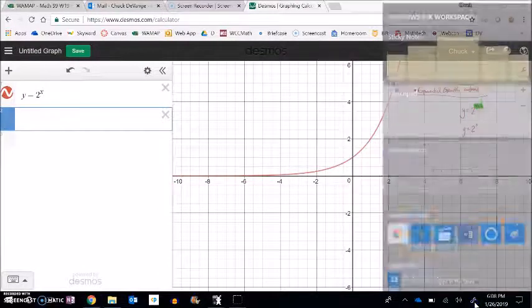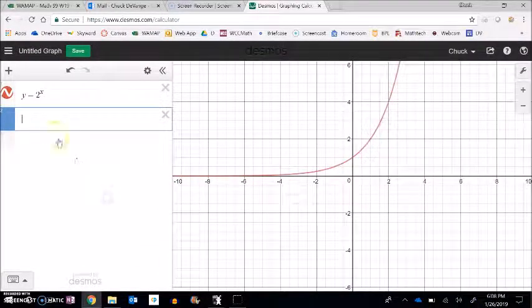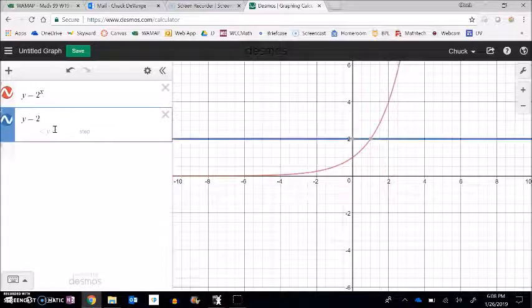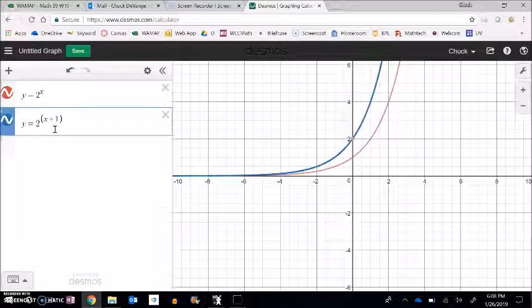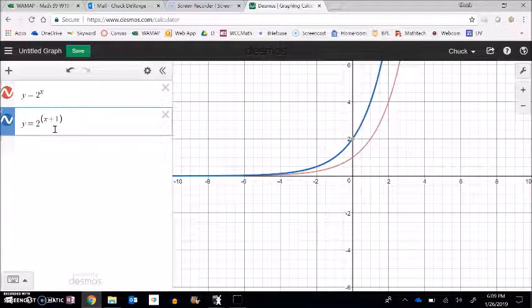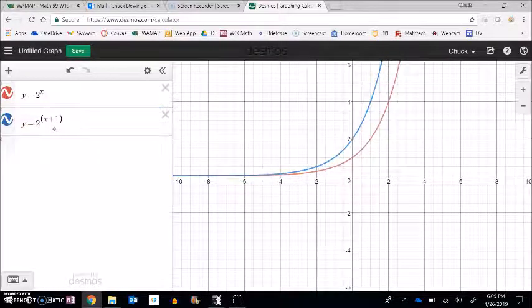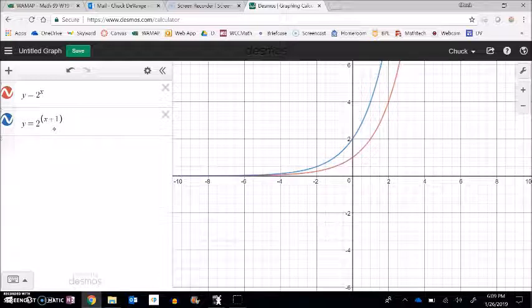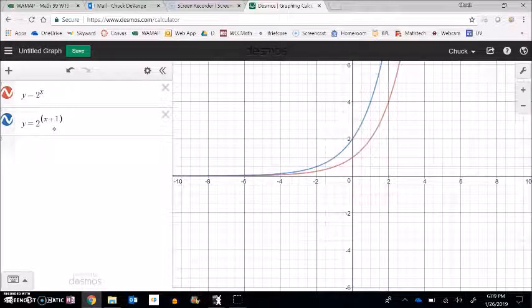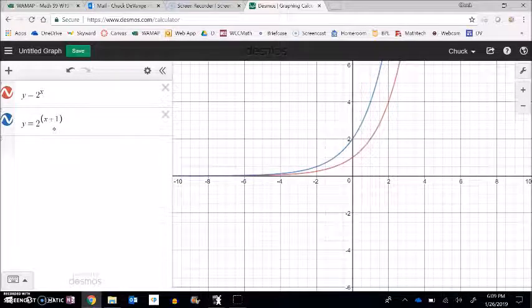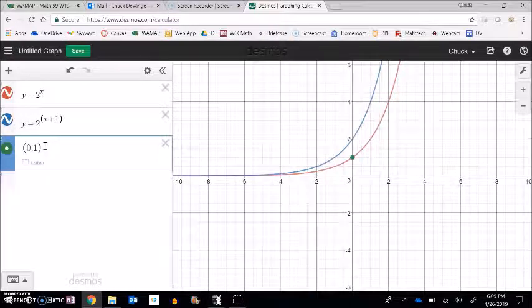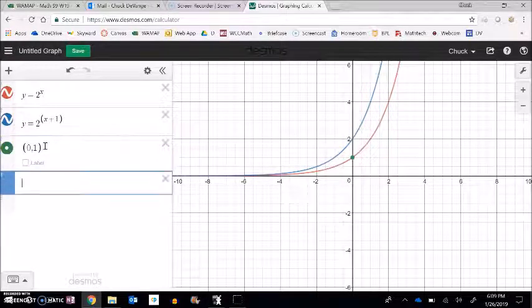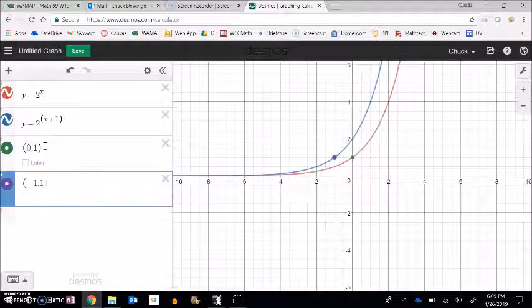So there's y equals 2 to the x. Now if I have y equals 2 to the... Interesting. It looks like it shifts up one from here, but it doesn't. It doesn't shift up one here. What it is doing is it's moving it to the left one. So this point on the original equation, 0, 1, it shifted back one to the point negative 1, 1.